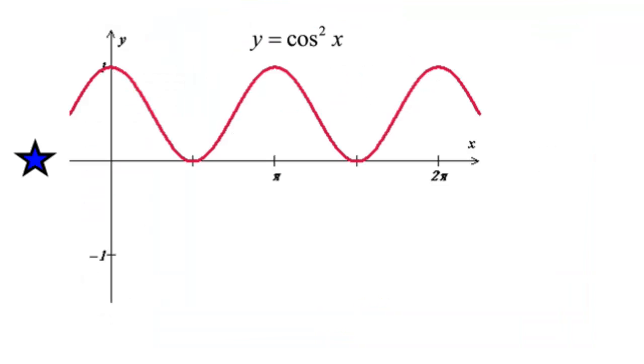Here, our behavior follows the cosine function, starting at a maximum on the y-axis, and here again we have a period of pi. Now, here, our sinusoidal axis isn't the x-axis, but halfway between 0 and 1.